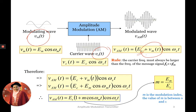When we expand it, it will be like this where EC is the amplitude of the carrier, EM is the amplitude of the modulating signal. Omega M is the parameter that represents the frequency of the modulating signal — basically 2π FM where FM is the frequency of the modulating signal. And omega C represents the frequency of the carrier.